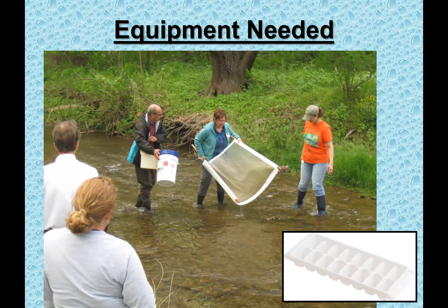The equipment needed for a macroinvertebrate biological assessment is very simple. The biggest thing you need is a kick net — you can purchase one or make your own with two broomsticks and window screening. The mesh size needs to be small enough to catch small aquatic insects. You'll also want an ice cube tray or egg carton, and a bucket is helpful for collecting water and critters, though not required.